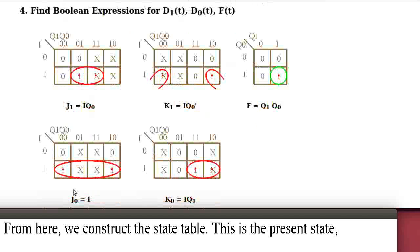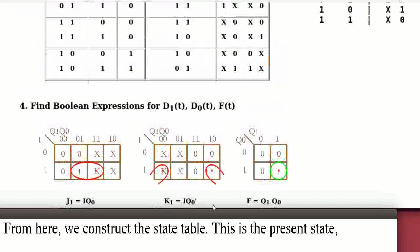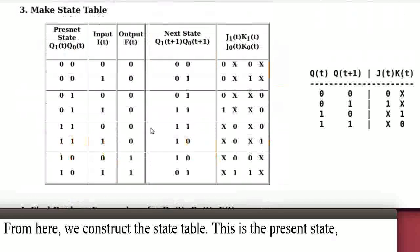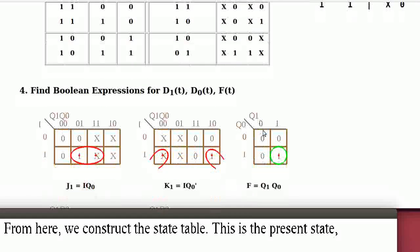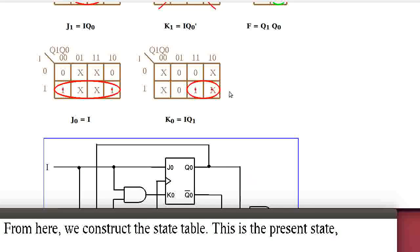Similarly, we derive J0 and K0. For the output F, because this is a Moore machine, it does not depend on the input — it is a function of the present state Q1, Q0. The Karnaugh map gives entries 0, 0, 0, 1 for Q1Q0 combinations. So F equals Q1·Q0. We now have all the equations needed to construct the circuit.